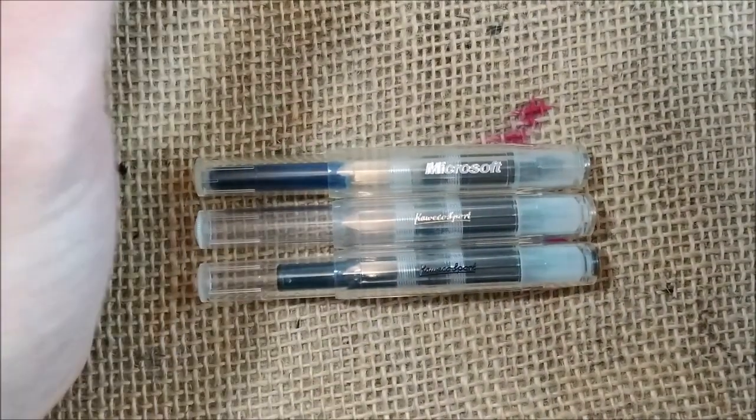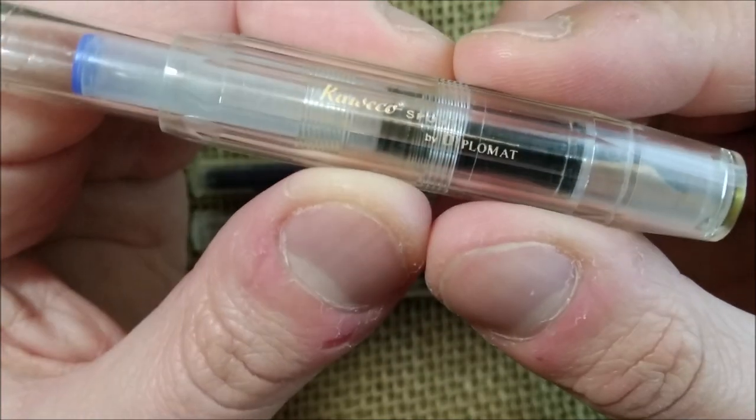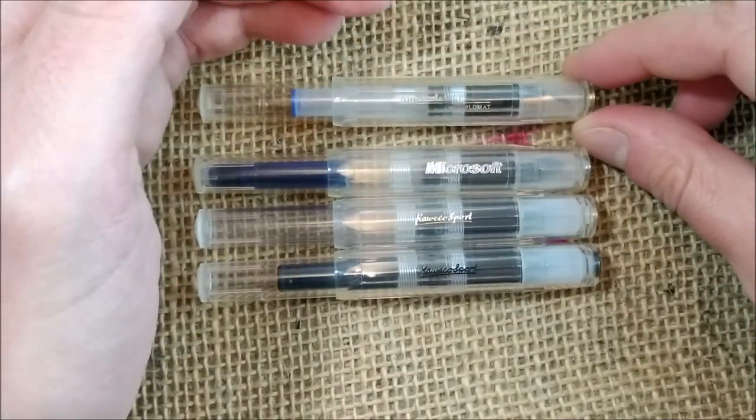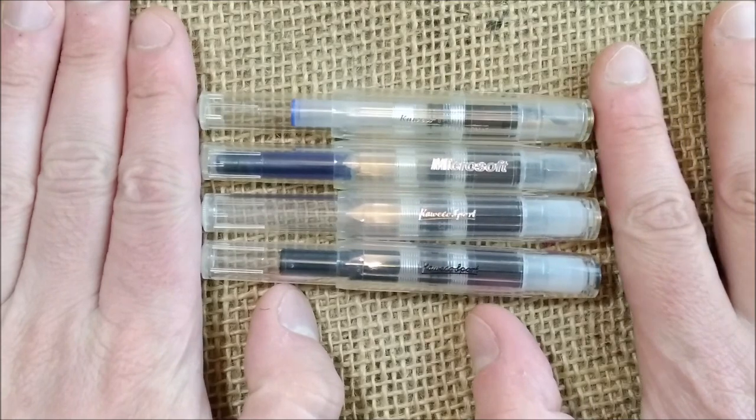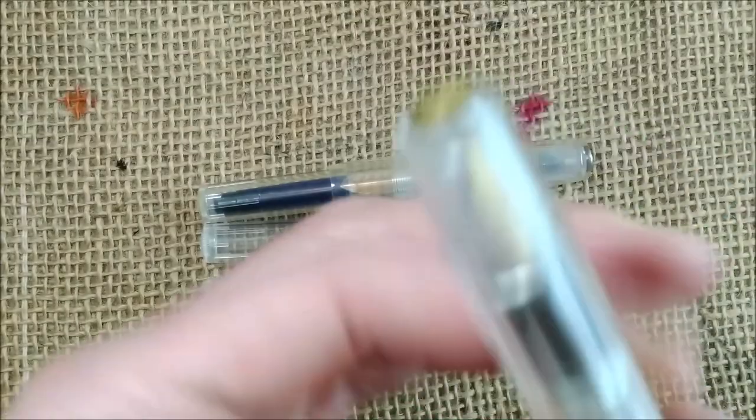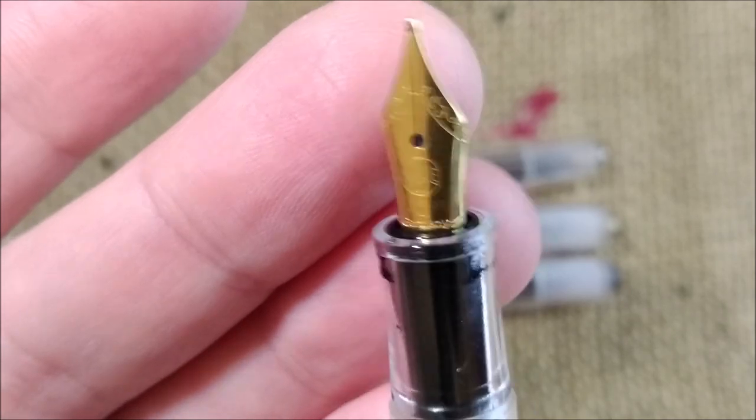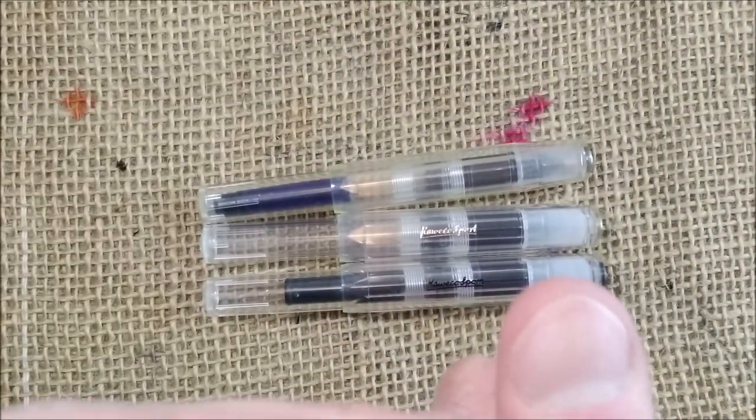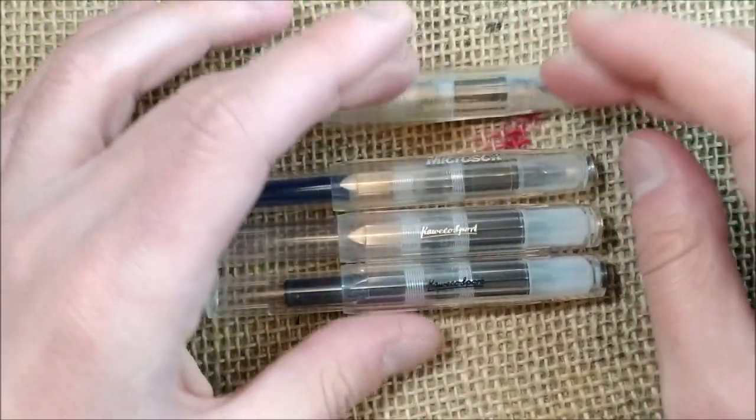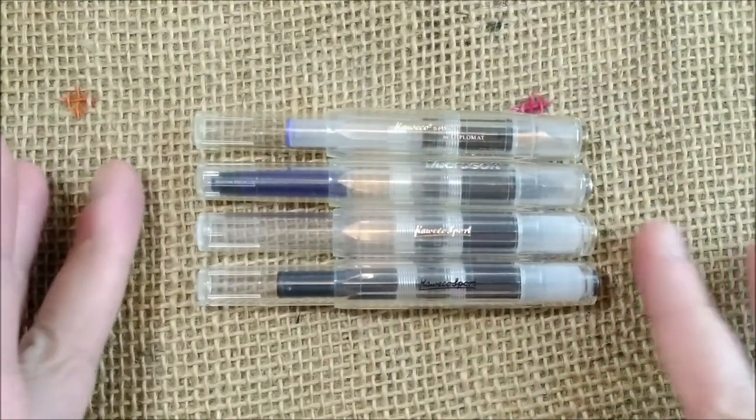And then we have also the Kaweco Sport in the clear version by Diplomat. These were kind of the first Kaweco Sports when they were re-launched by the current administration of the brand. So this is overall the same kind of pen. The nib is the same as in the Microsoft edition, but this one is gold trim. So this is it. These are my four clear transparent Kaweco Sport pens.